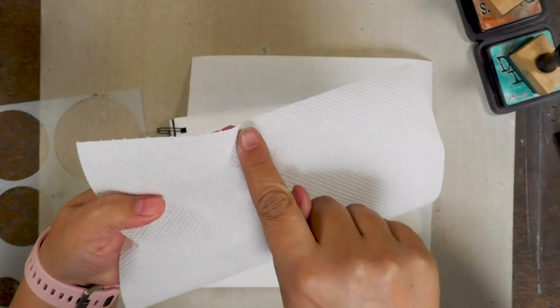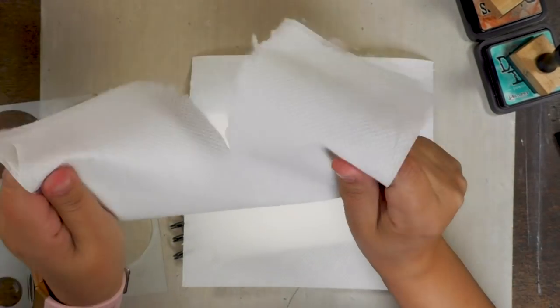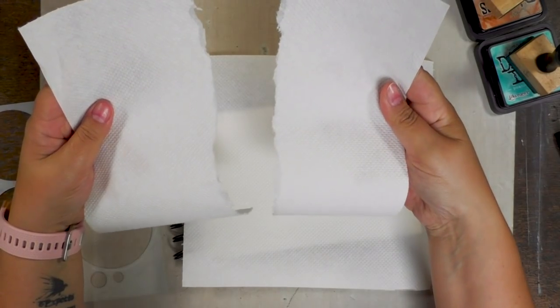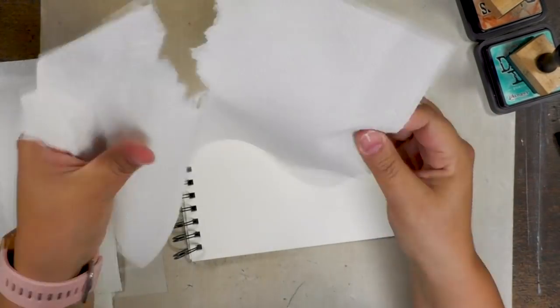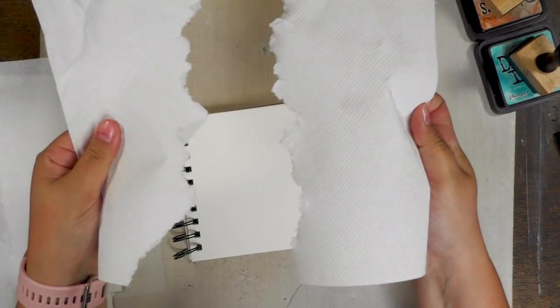First things first, the way you rip your kitchen roll will give you either a straight line or a wonky line. To obtain that second effect you have to start ripping on the non-pre-perforated side.